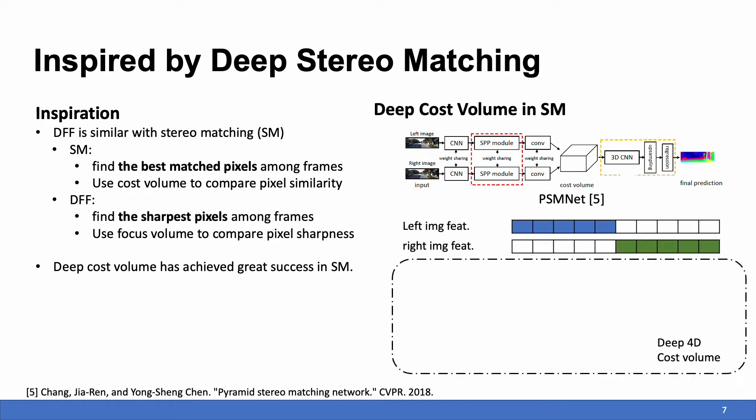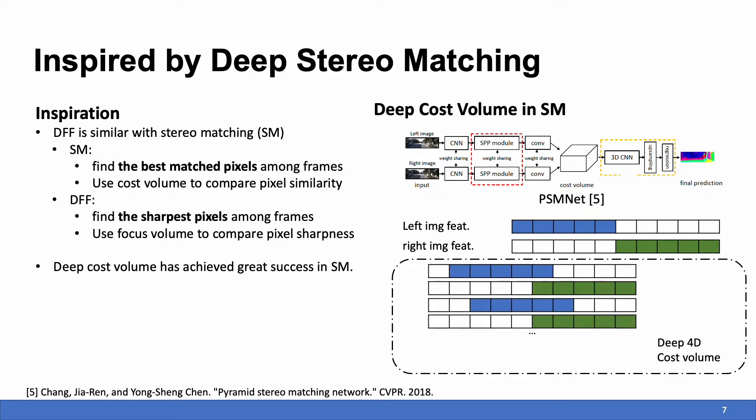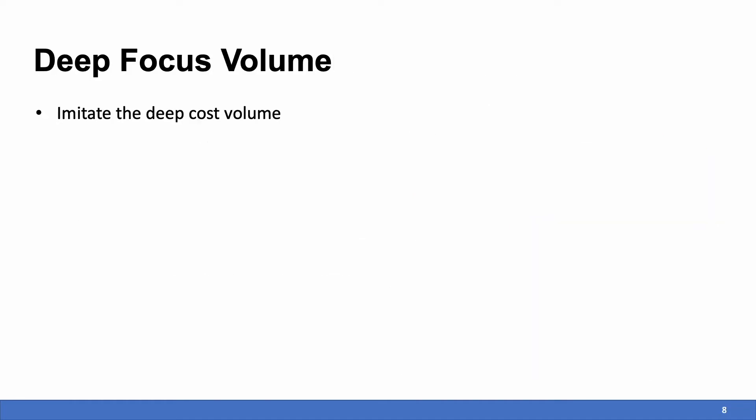All the compared pairs will be stacked in a new disparity dimension, and the 3D CNN will be used to aggregate the information and provide the final disparity estimation. Considering the similarity between DFF and stereo matching, we believe we can imitate the deep cost volume to build a deep focus volume.